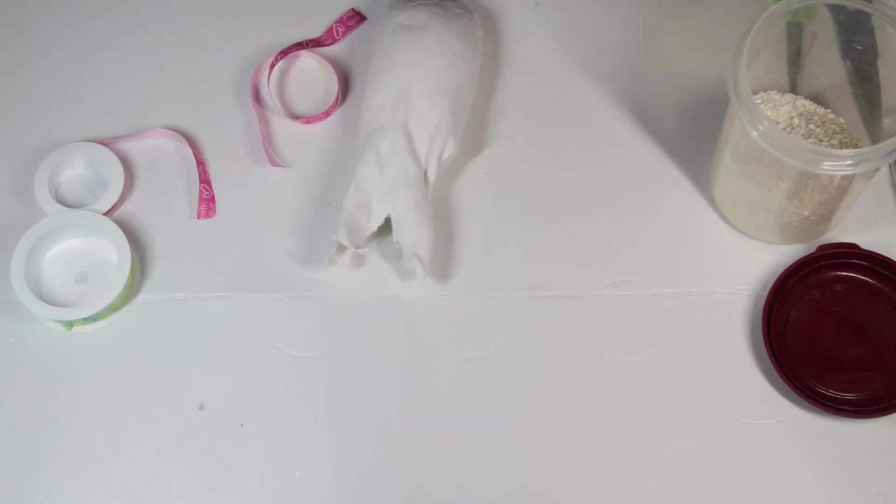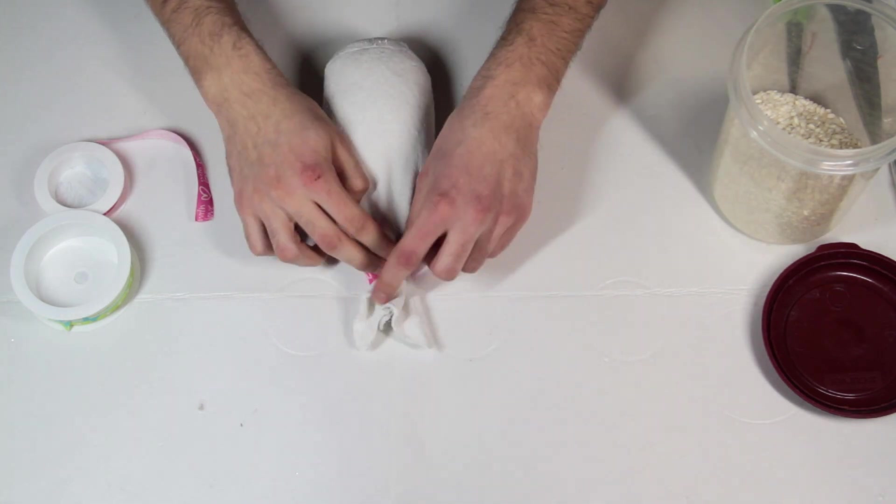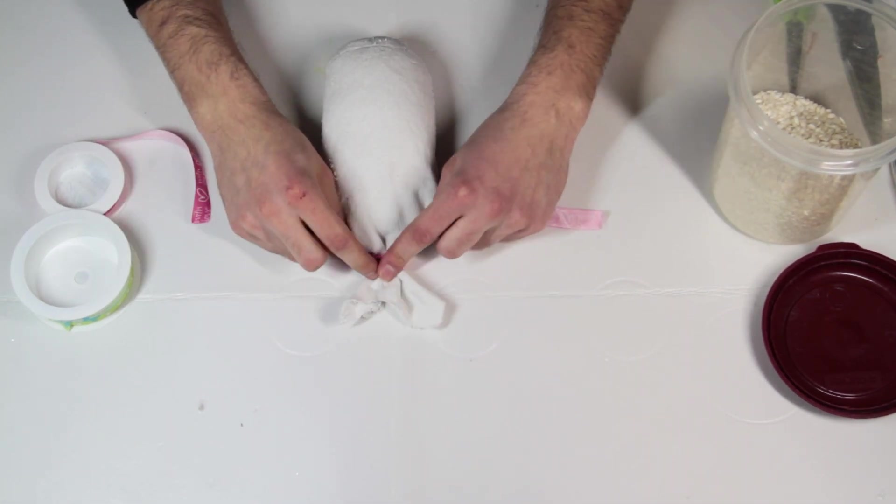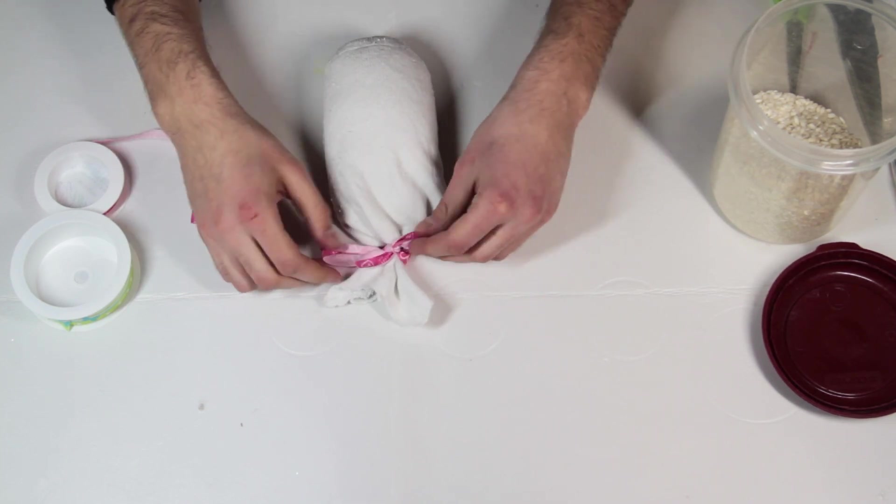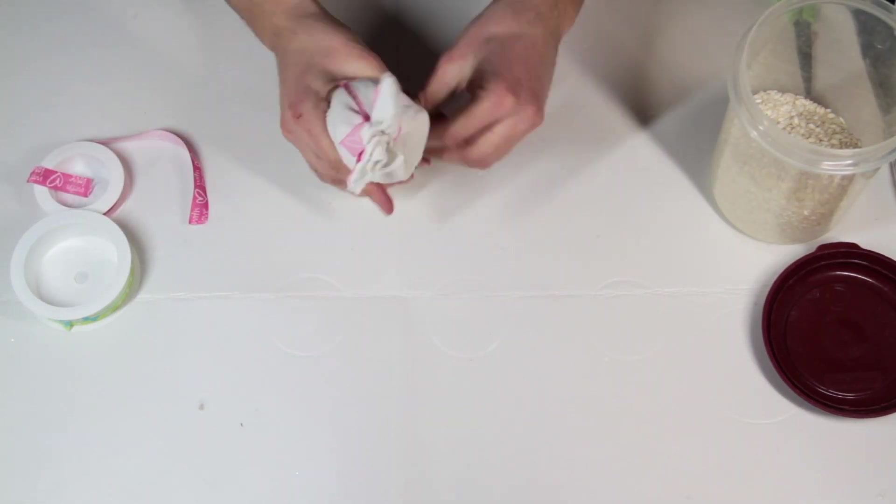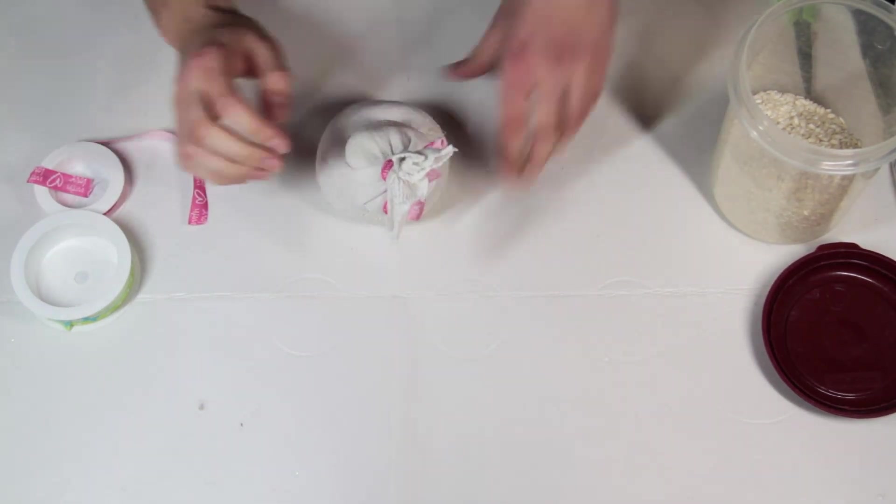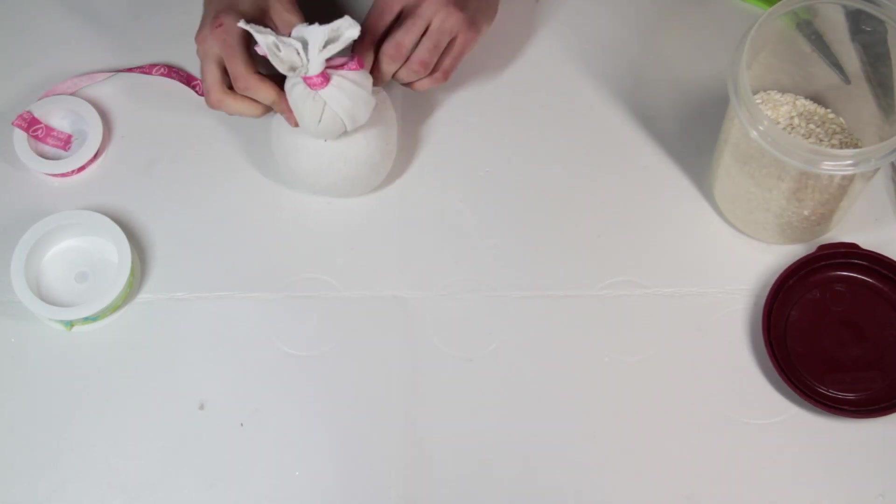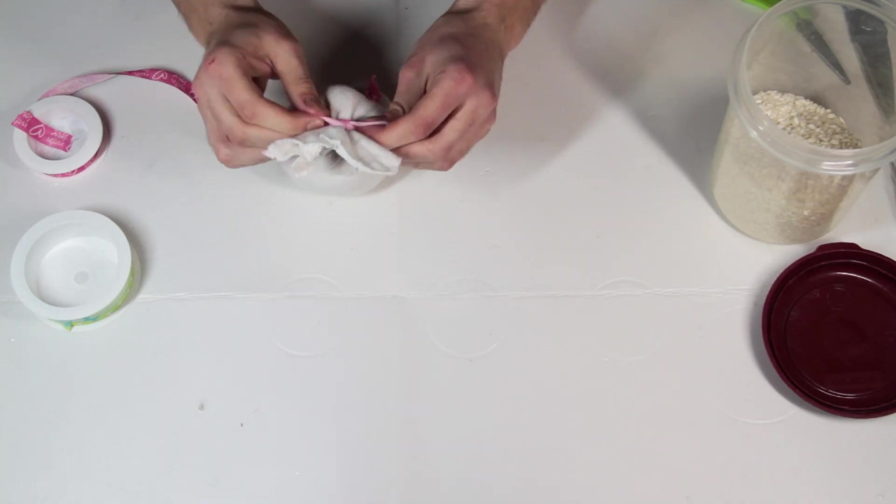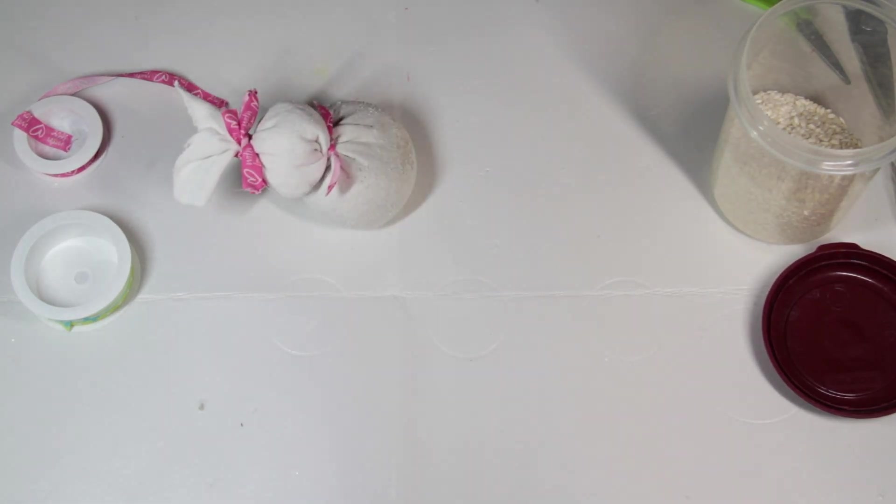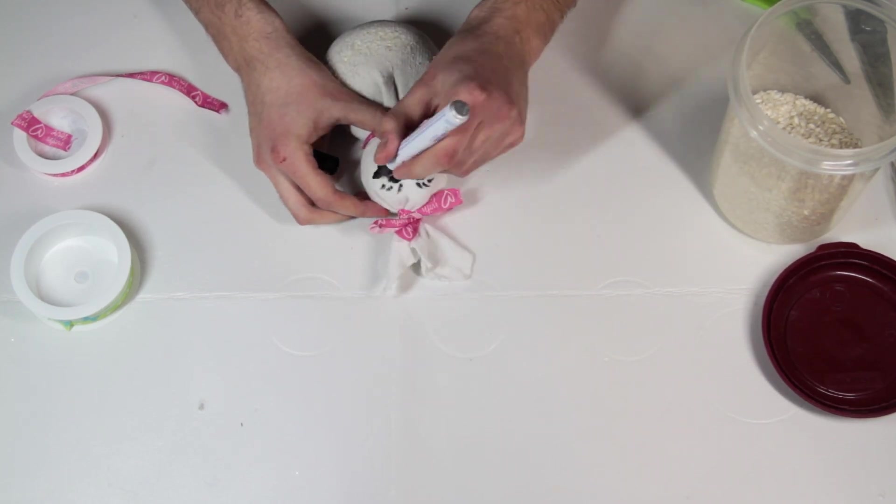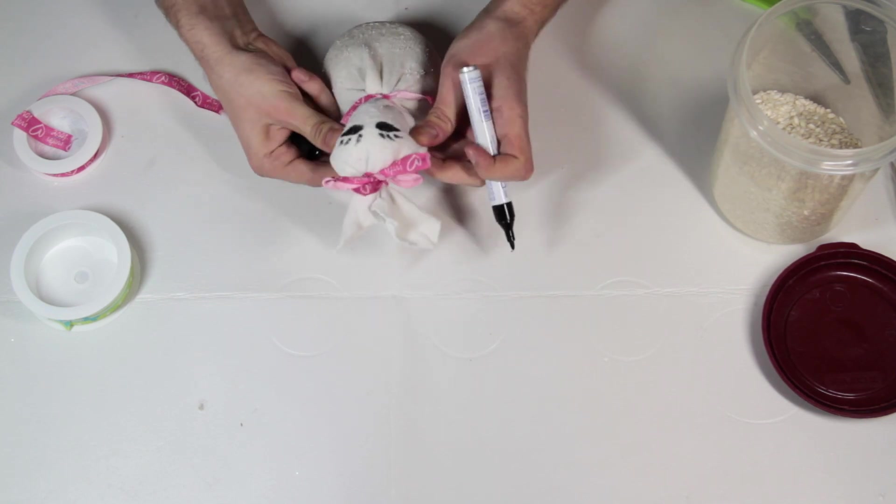Next step is that you create like a little body from that sock, and the hat is just secured with some ribbon again. For the last step, we're just gonna take a marker again and draw on a little face, and don't forget the lashes.